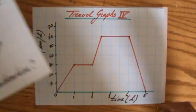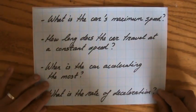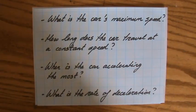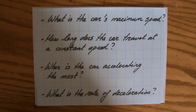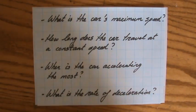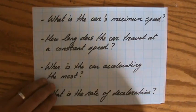Let's have a look at the questions we are going to answer now. What is the car's maximum speed? How long does the car travel at a constant speed? When is the car accelerating the most? And finally, what is the rate of deceleration? These are all important questions.